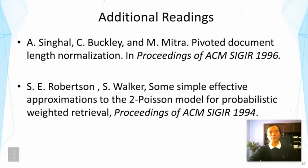There are some additional readings. The first is a paper about pivoted length normalization — an excellent example of using empirical data analysis to suggest the need for length normalization and then derive the normalization formula. The second is the original paper where BM25 was proposed. The third paper has a thorough discussion of BM25 and its extensions, particularly BM25F. And finally, the last paper has a discussion of improving BM25 to correct the over-penalization of long documents.